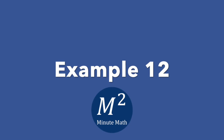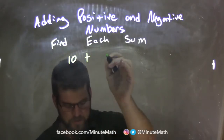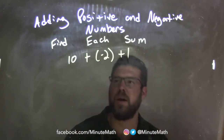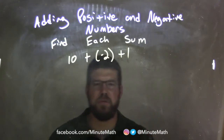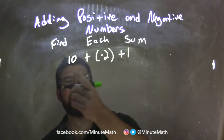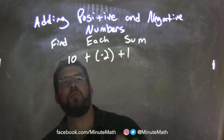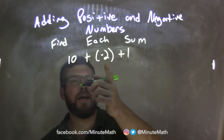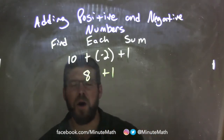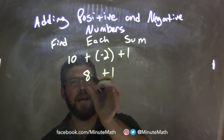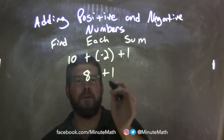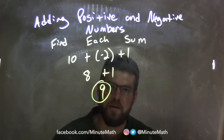For example, 10 plus a negative 2 is the same thing as 10 minus 2, which is 8. Bring down that 1 from the previous problem. So 10 plus a negative 2 comes out to be 8, and 8 plus 1 is just 9. There's our final answer.